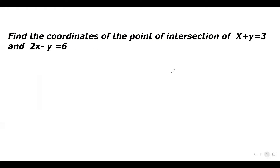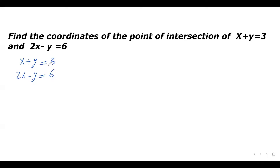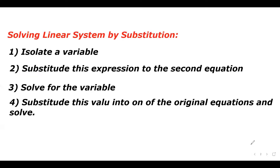Here is the first example: find the coordinates of the point of intersection of x plus y equals 3 and 2x minus y equals 6. We have the equations of two lines and we're trying to find the point of intersection. So we make a linear system: x plus y equals 3, and 2x minus y equals 6. We'll solve using the substitution method, following the four steps.